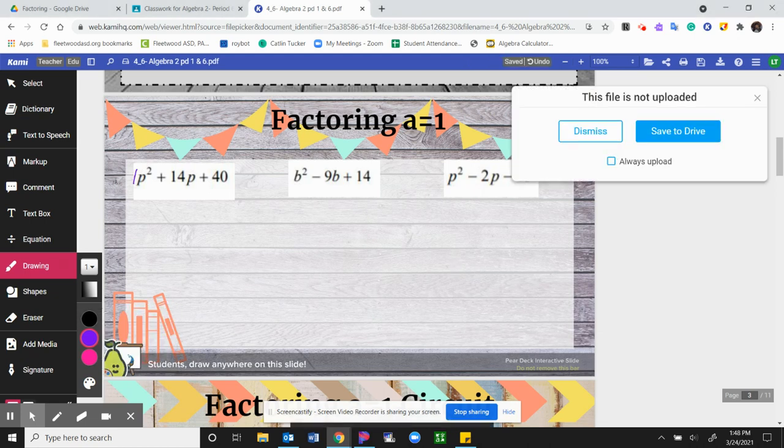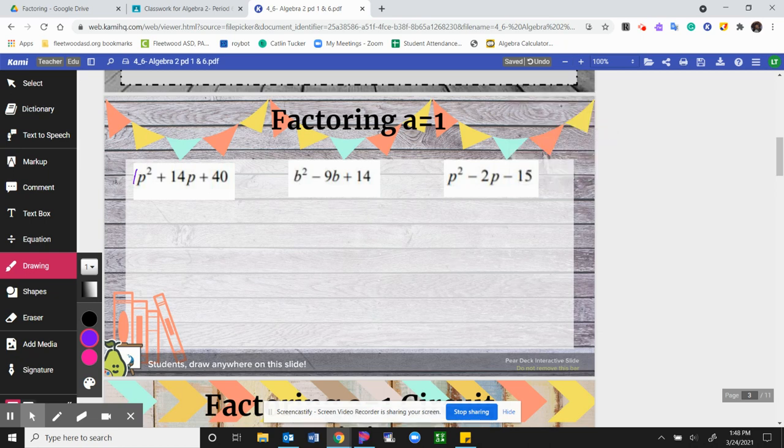What we're looking for here is two numbers that multiply to get our last number and add to get our first number here. So if we think about this, if we make our list for 40, we have 1 and 40, 2 and 20, 3 doesn't go in, 4 and 10.